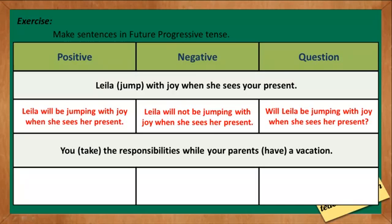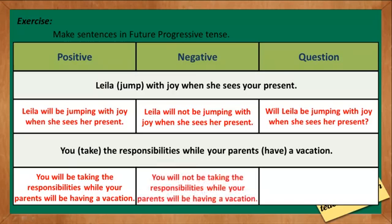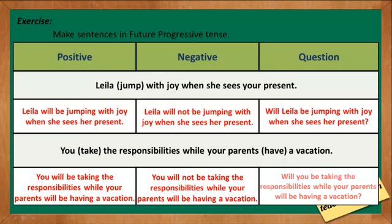The second one: 'You take the responsibilities while your parents have a vacation.' The correct positive statement is: 'You will be taking the responsibilities while your parents will be having a vacation.' The negative sentence is: 'You will not be taking the responsibilities while your parents will be having a vacation.' And the question is: 'Will you be taking the responsibilities while your parents will be having a vacation?'